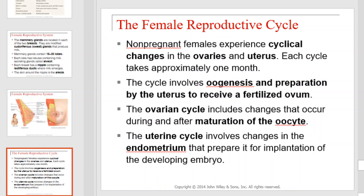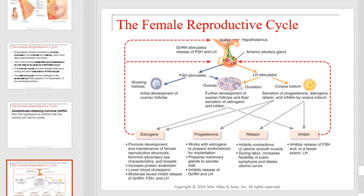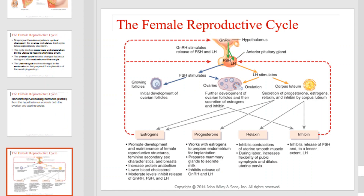Non-pregnant females experience cyclical changes in the ovaries and uterus. Each cycle takes approximately one month. The cycle involves oogenesis and preparation by the uterus to receive a fertilized ovum. The ovarian cycle includes changes that occur during and after maturation of the oocyte. The uterine cycle involves changes in the endometrium that prepare it for implantation of the developing embryo. GnRH from the hypothalamus controls both the ovarian and uterine cycles. This diagram illustrates the events leading up to the secretion of estrogens, progesterone, relaxin, and inhibin.